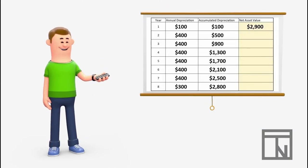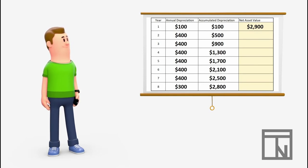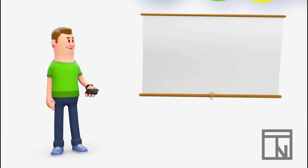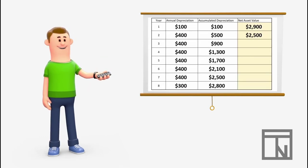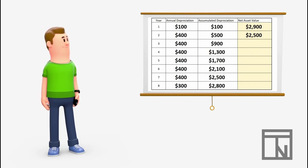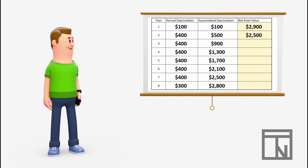After year 2, Bob's accumulated depreciation had increased to $500. This means that at the end of year 2, Bob's equipment had a net value of the original cost, $3,000 minus the accumulated depreciation of $500, which equals $2,500 as a net value.